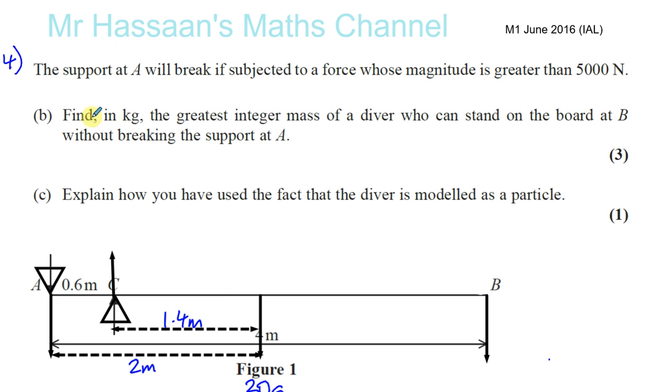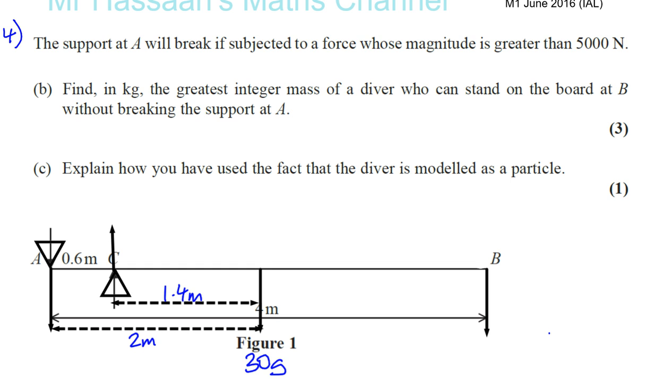Find in kilograms the greatest integer mass of a diver who can stand at the board at B. So we don't know the mass now. Before it was 50, wasn't it? Now we have to find what mass - let's call it M. So we have to find the greatest mass of the diver as an integer who can stand on the board at B without the support at A breaking.